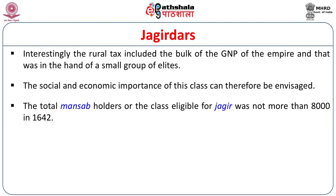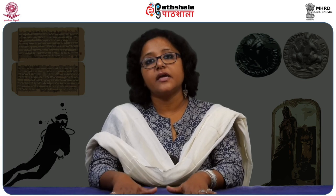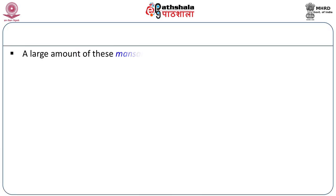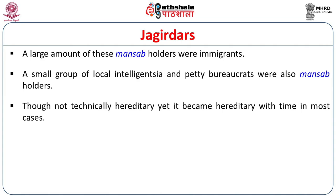The total mansab holders or the class eligible for Jagirs was not more than 8,000 in 1642. A very small portion of the mansab holders were zamindars, such as Rajputs, Baloch, and Dhaka chiefs. The others were direct people in military service. The large number of these mansab holders were immigrants. A small group of local intelligentsia and petty bureaucrats were also mansab holders.